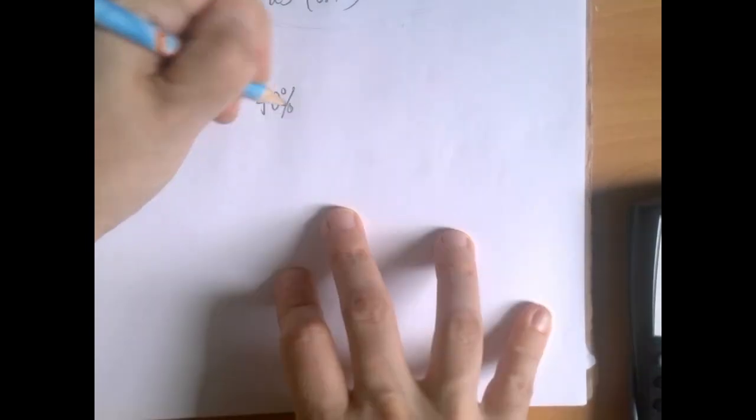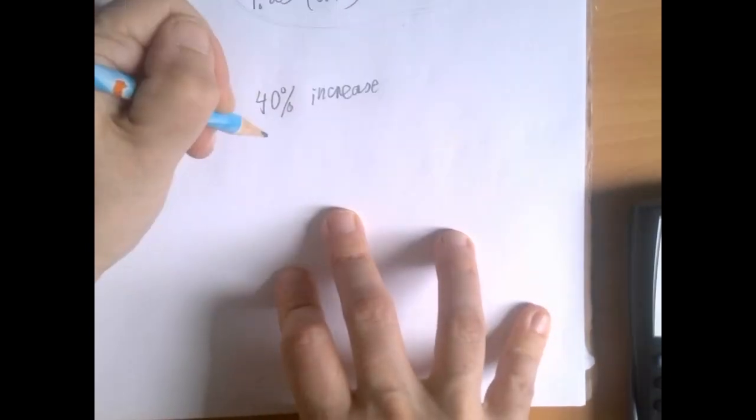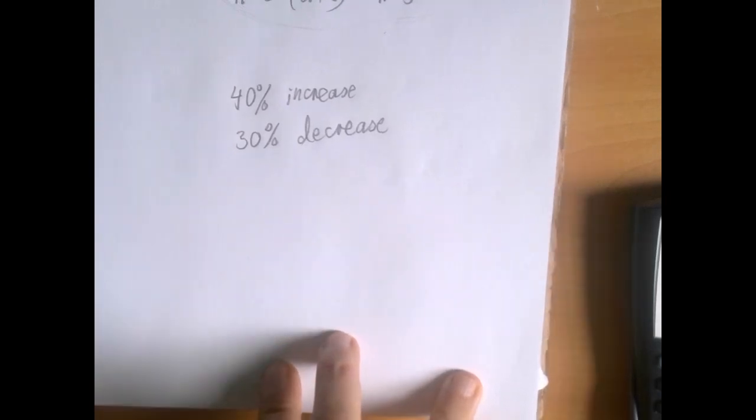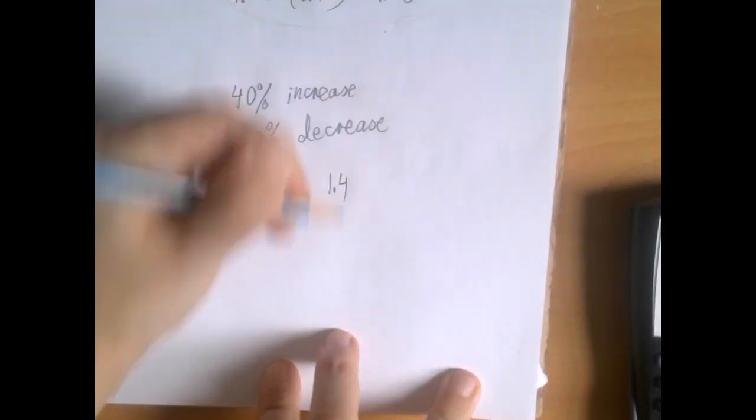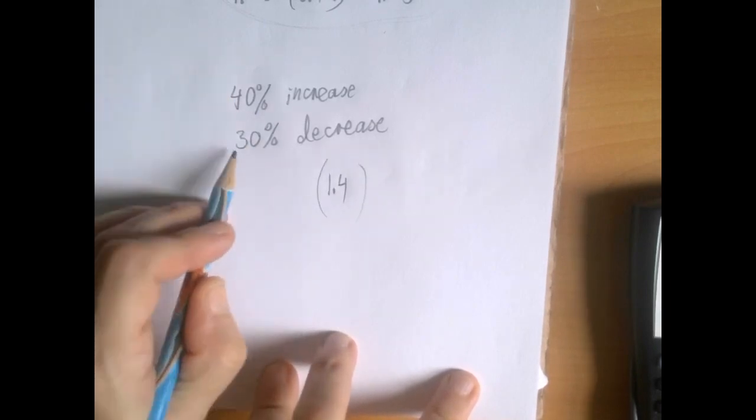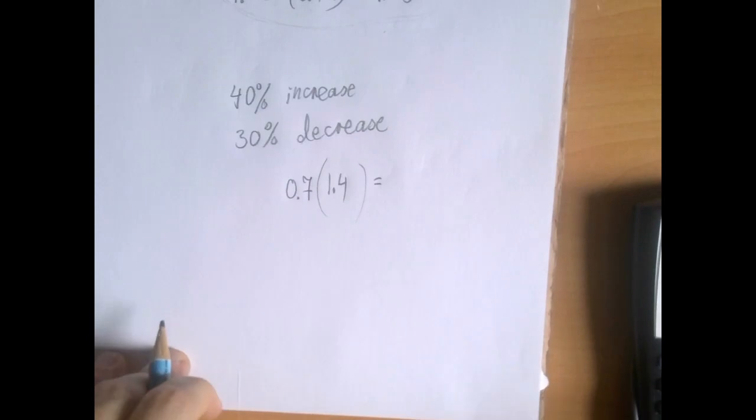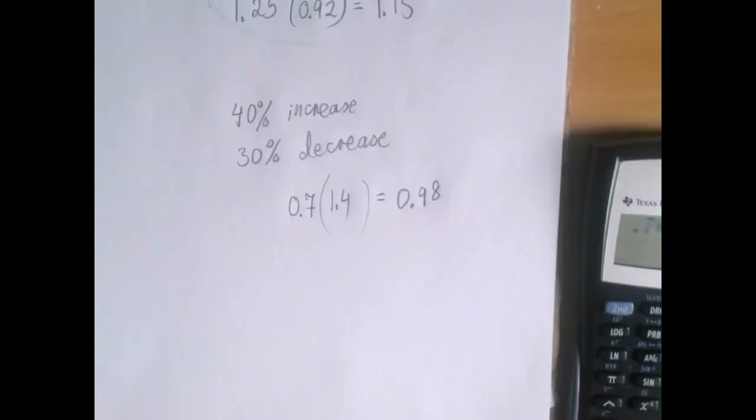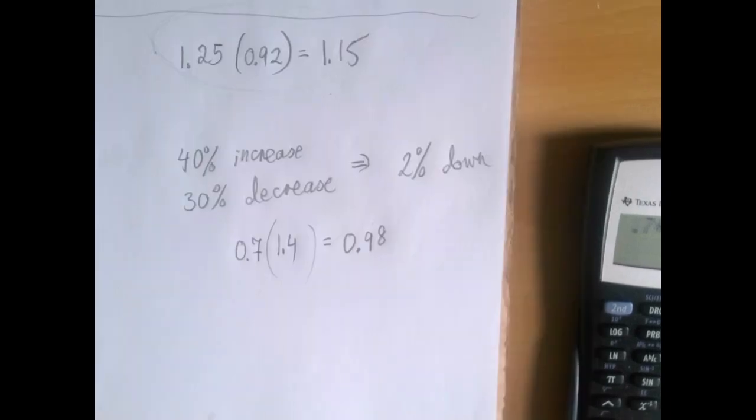Let's see just a quick example. Say, we have a 40% increase, and then, say, a 30% decrease. Let's start with a quantity. Let's increase it by 40%, and then, let's decrease it by 30%. That would mean that we are left with 70%. And so, when we multiply this out, we get 0.98. So, that means that a 40% increase, and a 30% decrease is the same as losing 2%. So, it's much quicker this way.